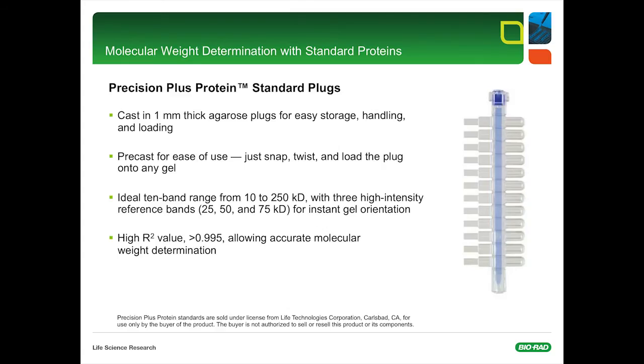The Precision Plus Protein Standard Plugs are a unique product for accurate molecular weight determination. The standard proteins are cast in 1-millimeter thick agarose plugs for easy storage, handling, and loading. The system is very easy to use. Just snap, twist, and load the gel plug onto any gel type. The plugs provide an ideal range from 10 kilodalton to 250 kilodalton, which is usually the separation range of two-dimensional electrophoresis, and included are three high-intensity reference bands which allow instant gel orientation. Molecular weight determination with those plugs is also very accurate. The R-squared value is close to 1.